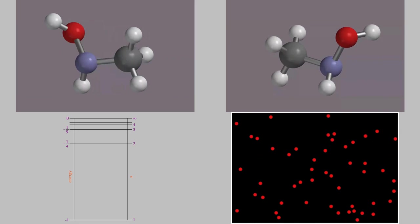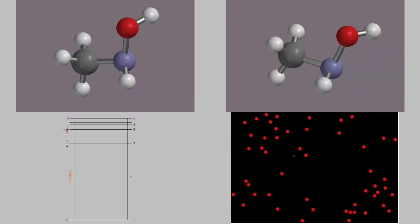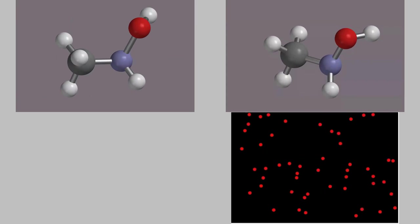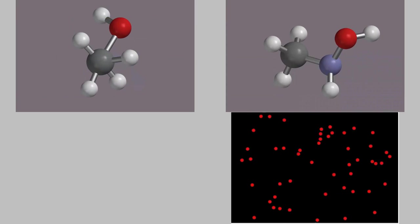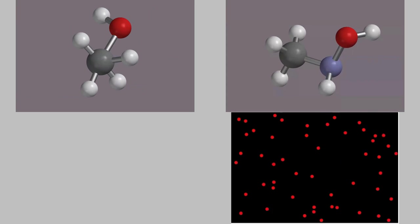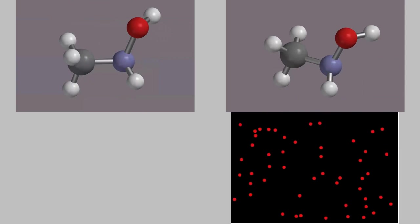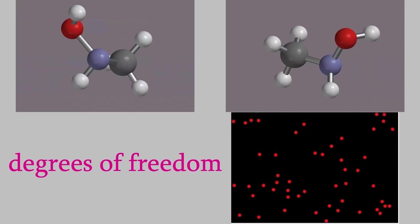Three of those four forms of energy involve motion: rotational, vibrational, and translational, and it's those that I want to focus on today. If we want to understand how the energy of a system is distributed among these forms of energy, we need to look at the number of degrees of freedom the molecules have.